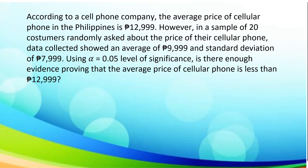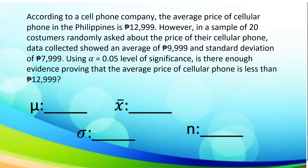Now let us take another given situation. Let us determine the mean of the population, the mean of the sample, the standard deviation of the population, and the number of samples. According to a cell phone company, the average price of a cellular phone in the Philippines is 12,999. However, in a sample of 20 customers randomly asked about the price of their cellular phone, data collected showed an average of 9,999 and a standard deviation of 7,999. Using alpha of 0.05 level of significance, is there enough evidence proving the average price of a cellular phone is less than 12,999?